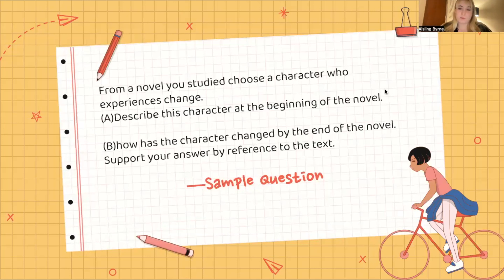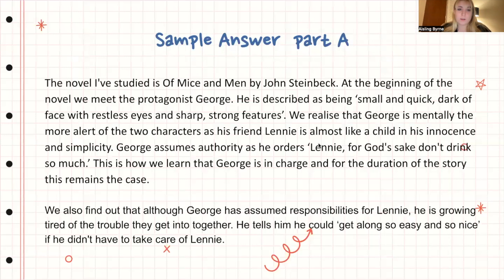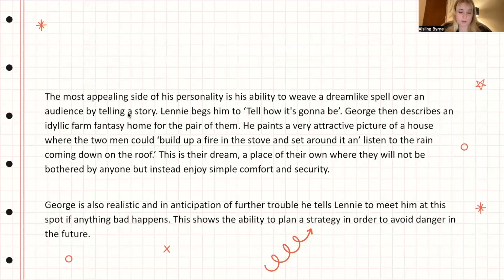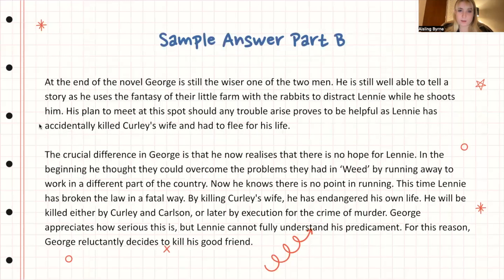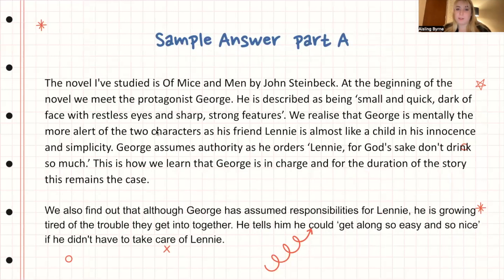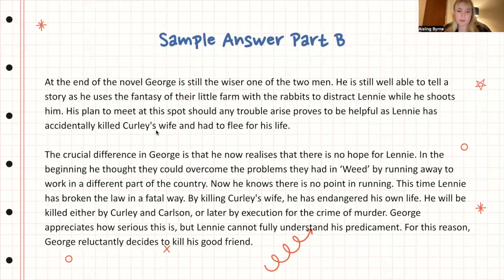Looking at this sample response overall — in Part A we stayed focused on who George was as the protagonist and hero, with evidence to back up every point, clear and effective. In Part B there was a clear change mentioned, we referred back to points made in Part A, and there was good use of quotes. The key things to remember: describe the character at the beginning, then show the change with clear textual references.